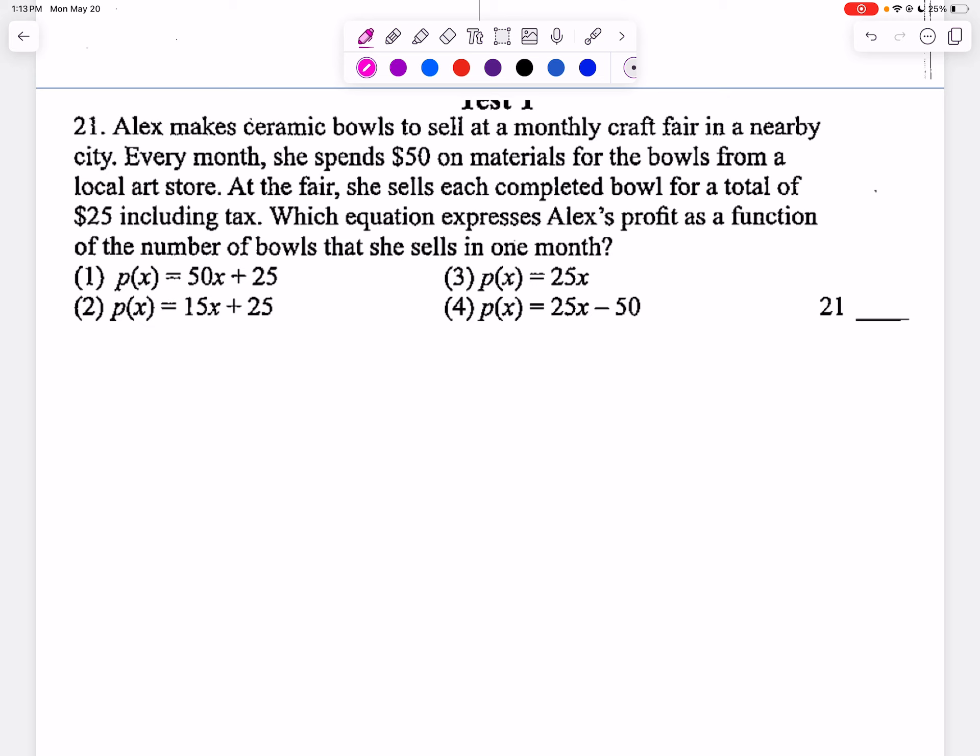If I look at all my answer choices, they're written in the form Y equals MX plus B, where M represents the slope or rate, and B represents the y-intercept, start value, or initial amount.